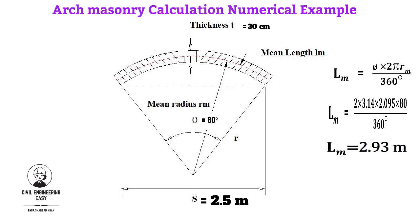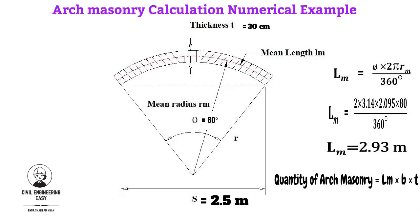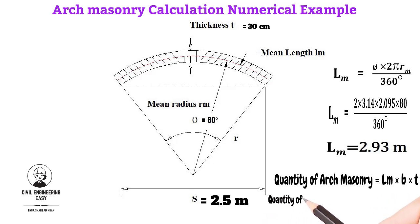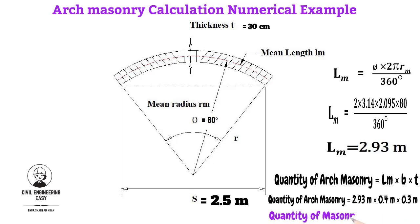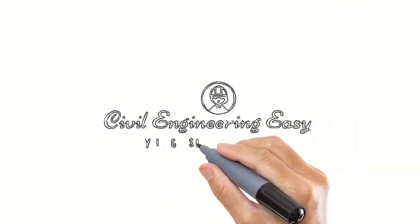Now we can calculate the quantity of arch masonry. Quantity equals mean length × breadth of wall × thickness of arch. Putting in the values: mean length is 2.93 m, width of wall is 0.4 m, and thickness of arch is 0.3 m. The total quantity of masonry equals 0.352 cubic meters.